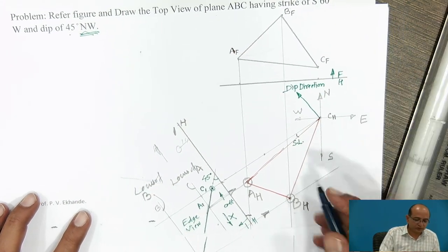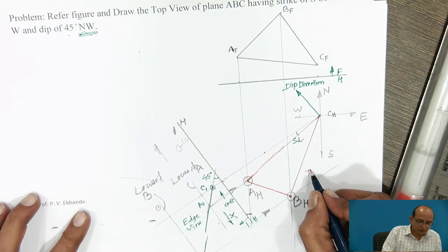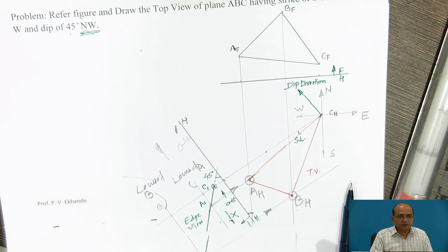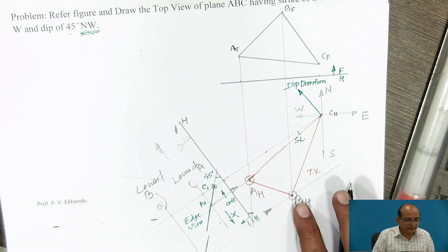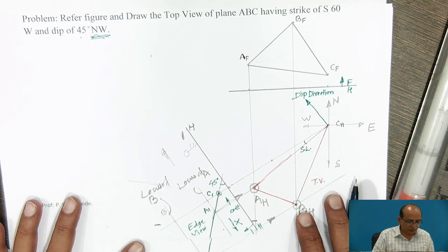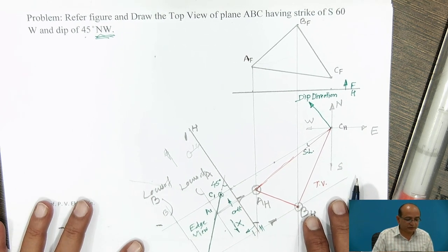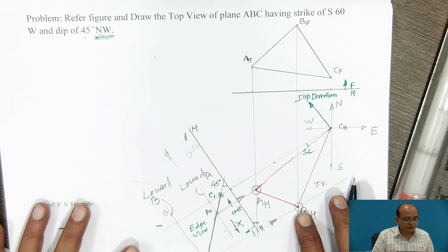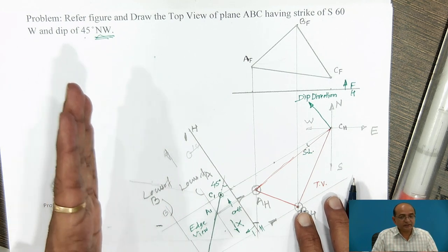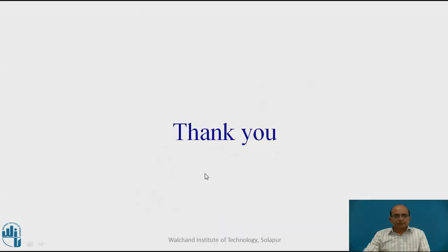This is the top view of the plane. This completes the procedure for obtaining the top view — completing the projections when the strike and dip of the plane are given. Thank you.